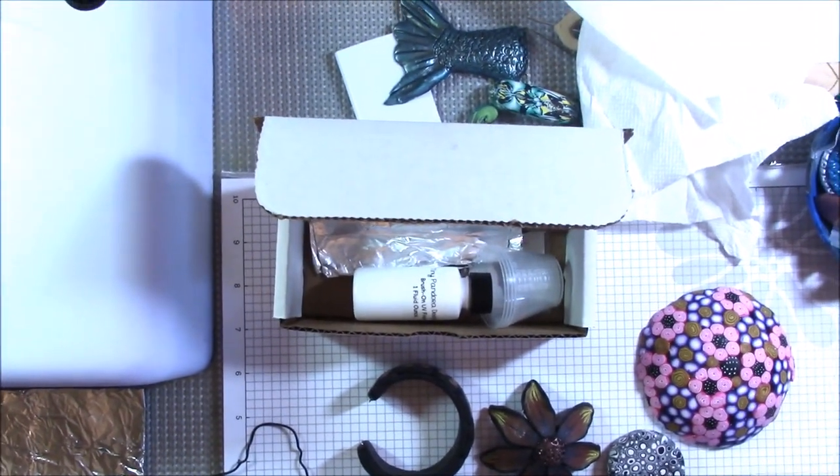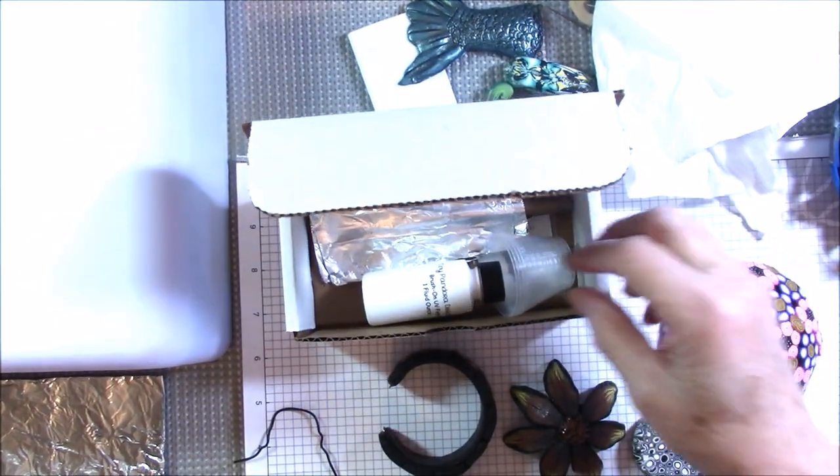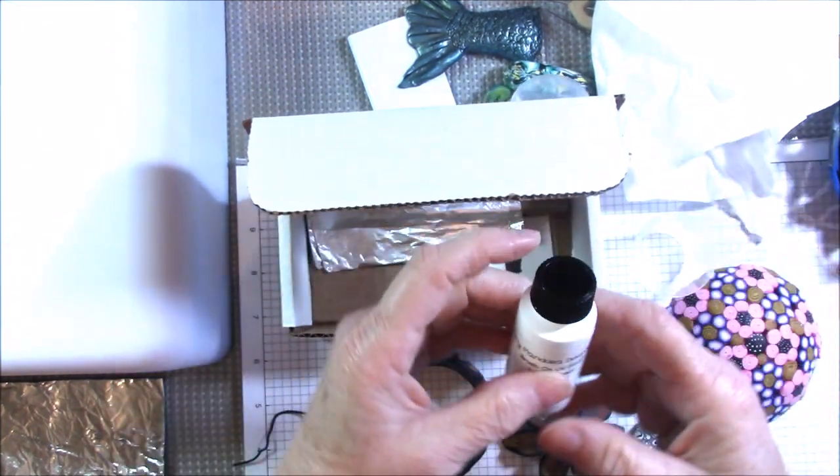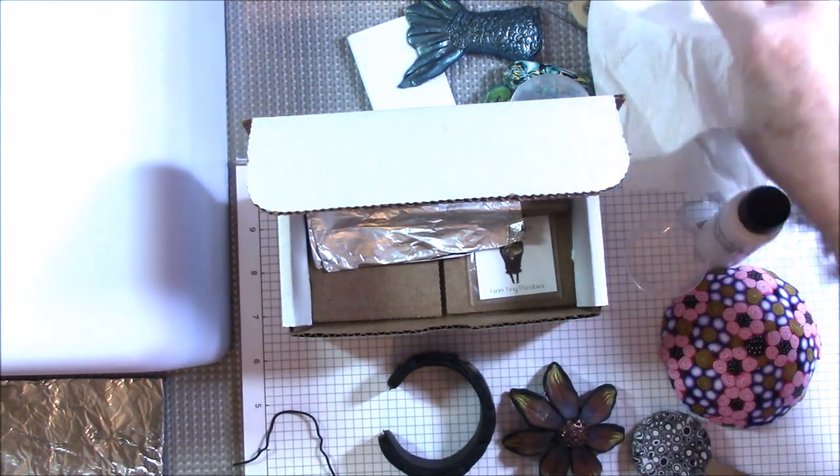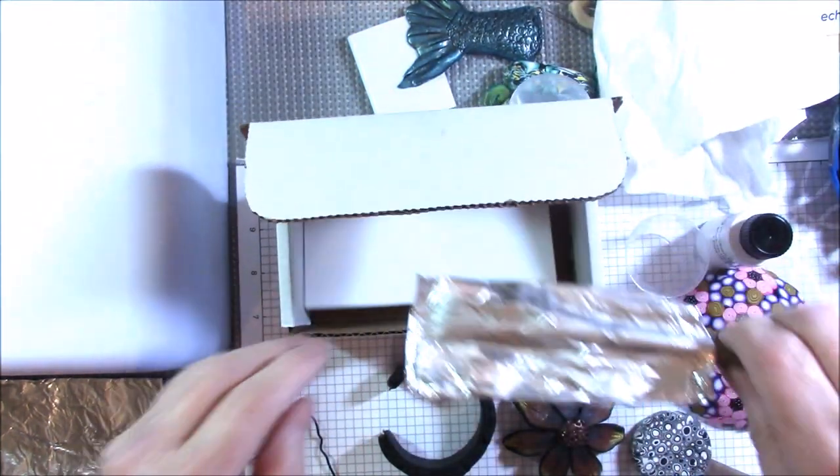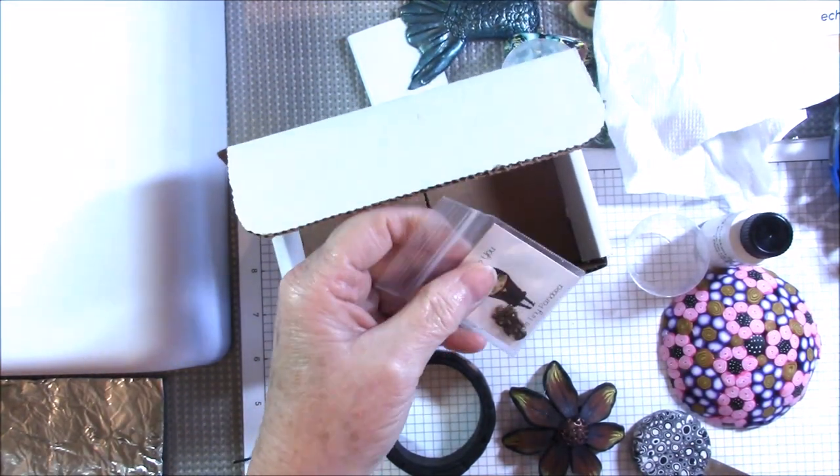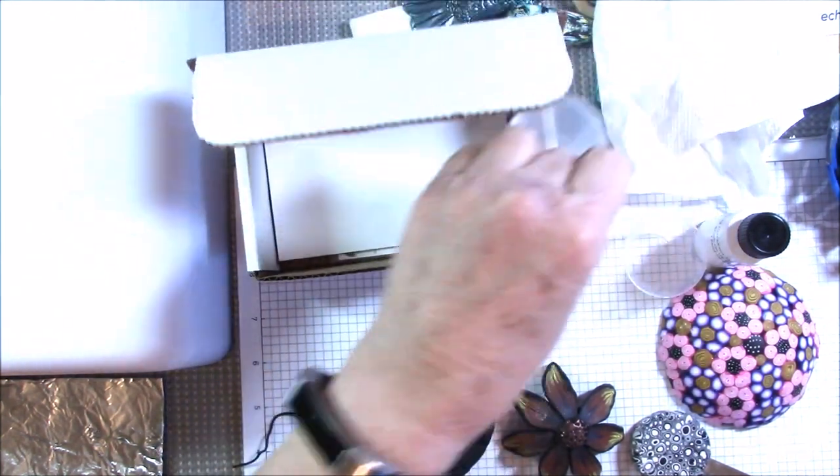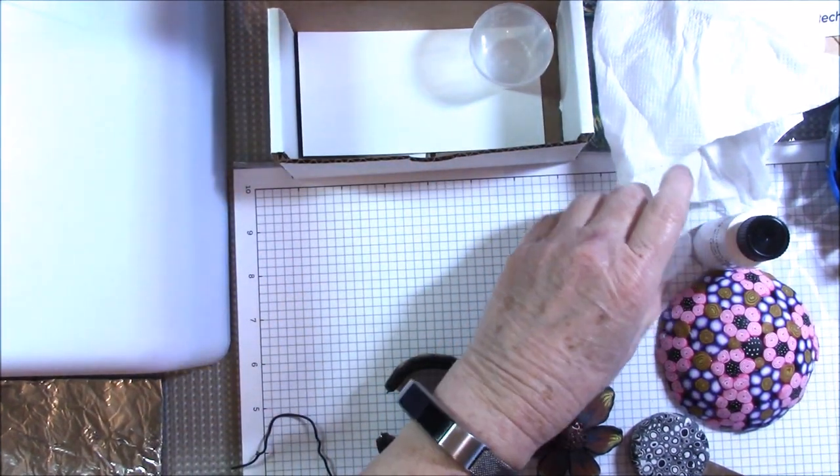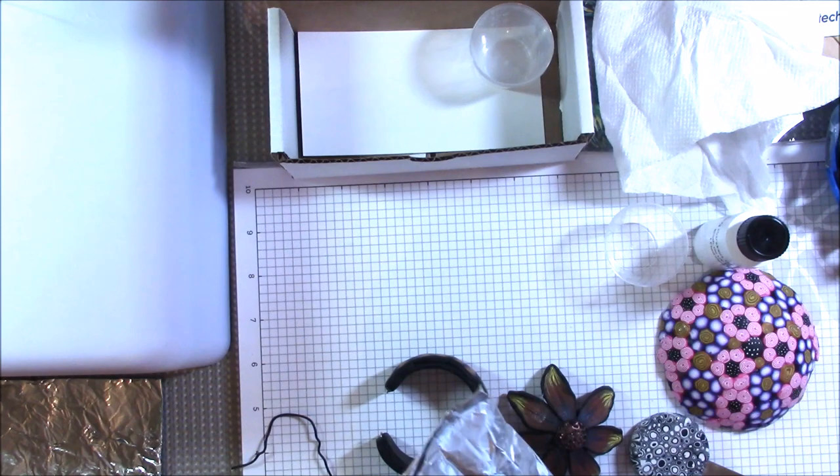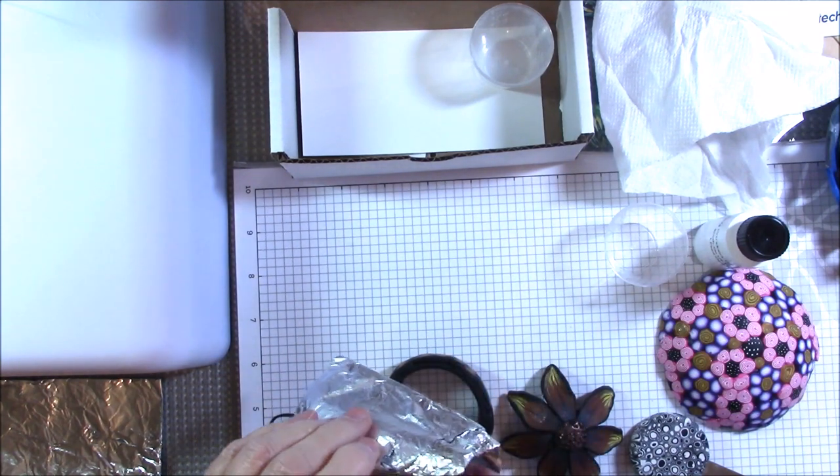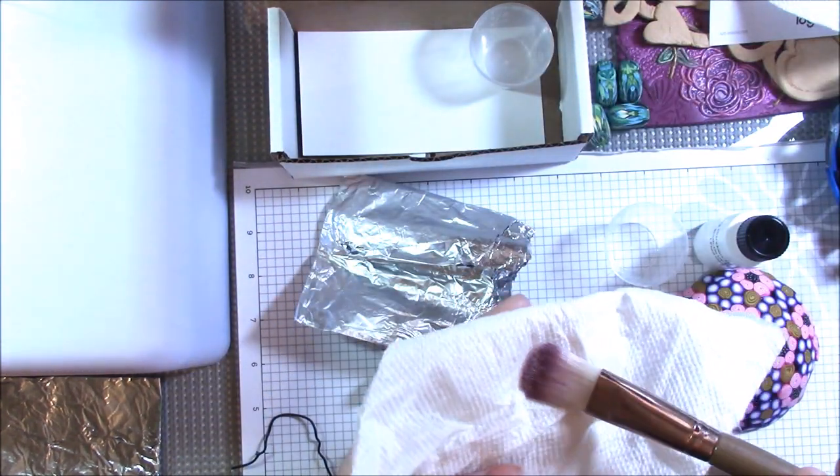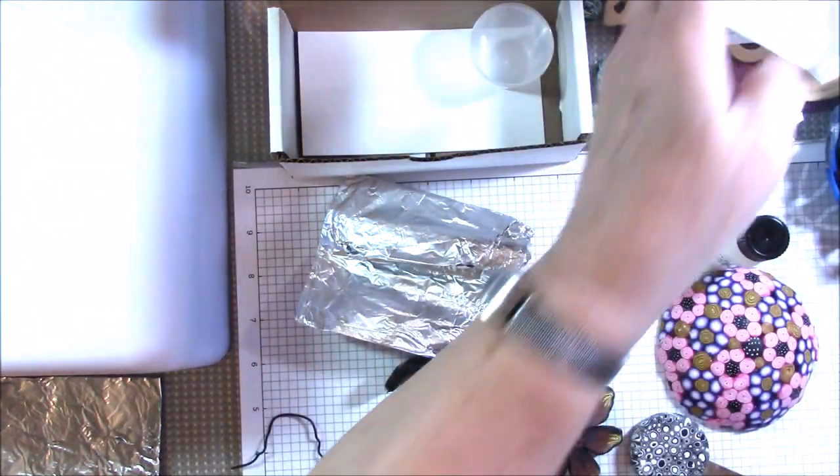Everything else comes in this little box. You get five cups and I have four left because I used one. The bottle is one ounce of resin and a brush. There's always a little extra, Teresa always throws in a little extra charm or something. This time I got an owl charm, she's so sweet. I haven't taken this brush out, but I was told if I keep it in the foil it's still nice and flexible. It's a really nice brush, it doesn't leave brush strokes if you're careful.